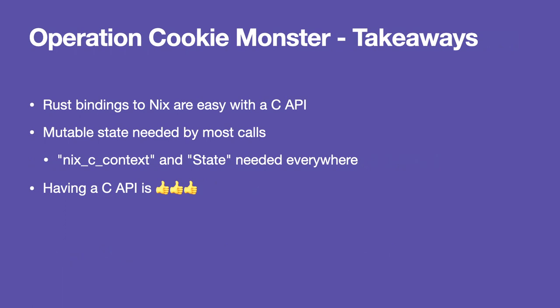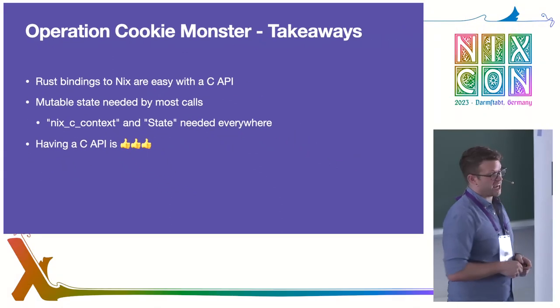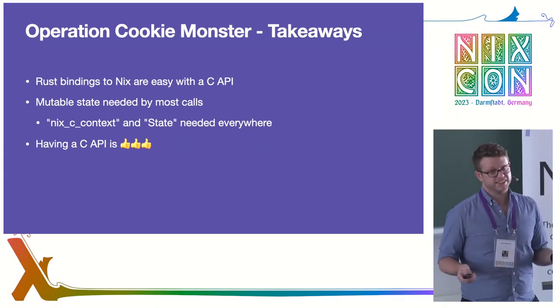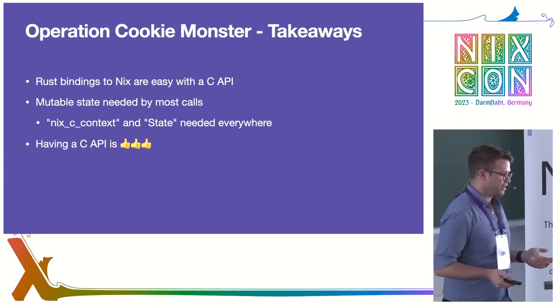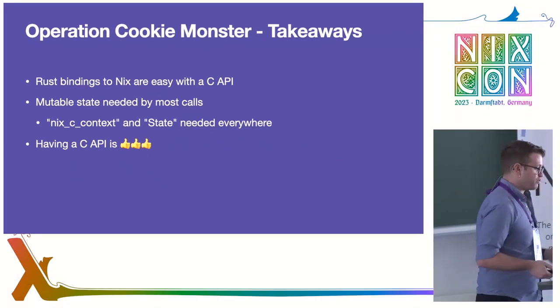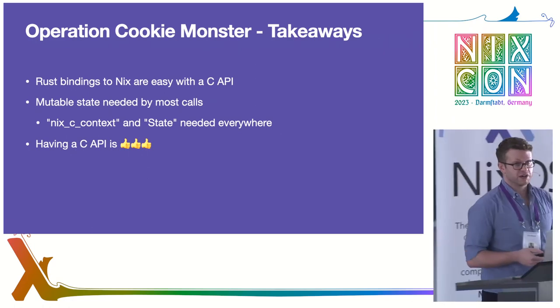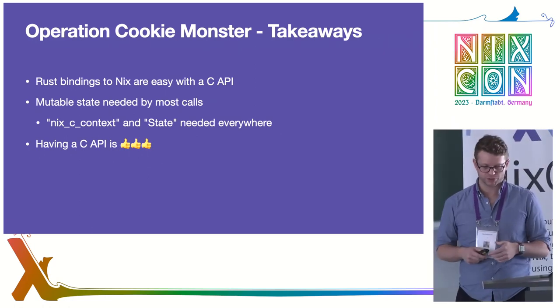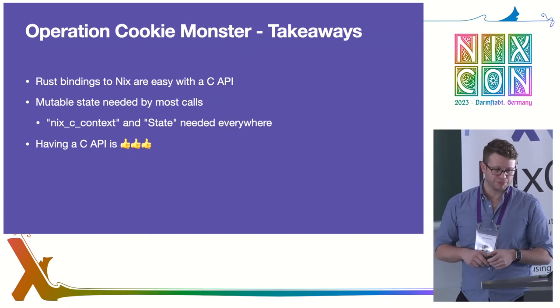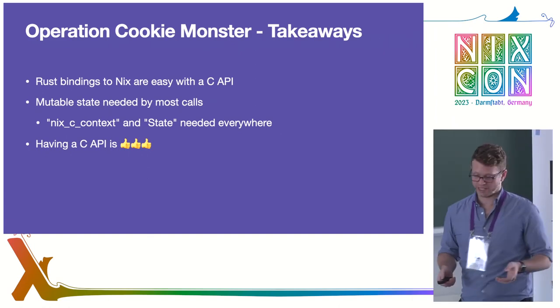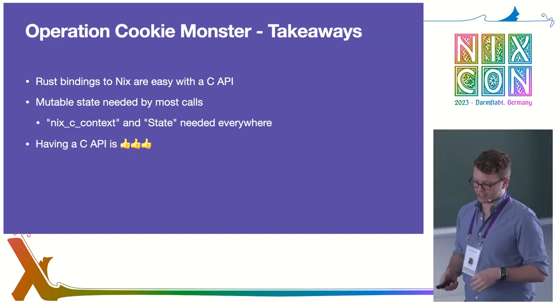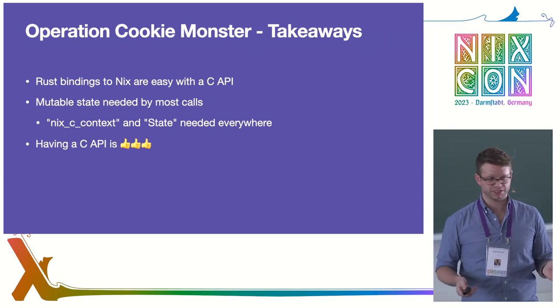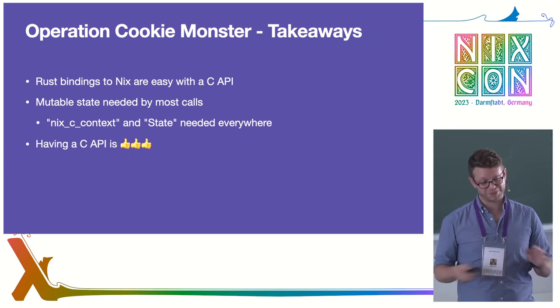Key takeaways: Rust bindings to Nix are actually really easy with the C API. Unfortunately, you need mutable state just about everywhere, so there's an impedance mismatch between the two. But having a C API at all is really, really nice. Also — don't use C++ bindings. They're bad.